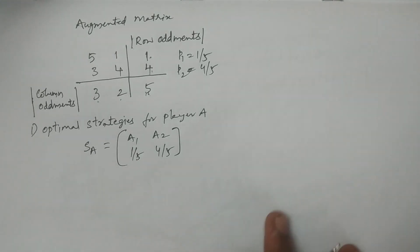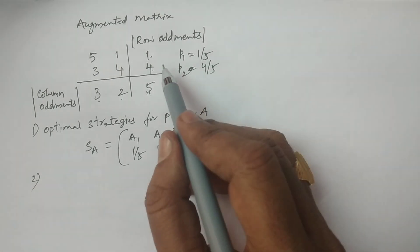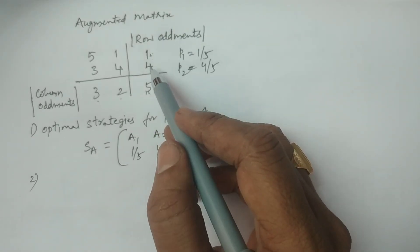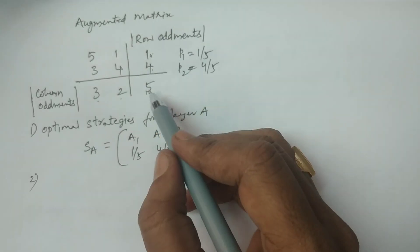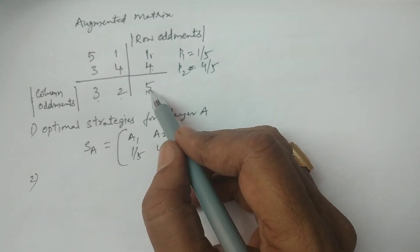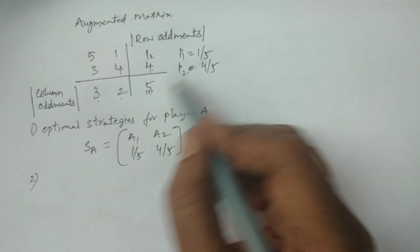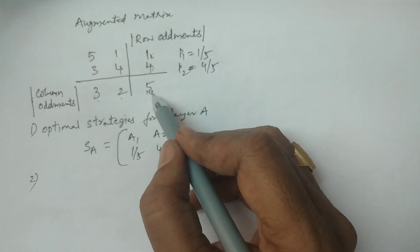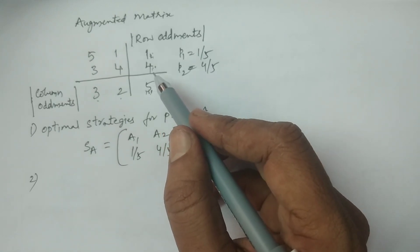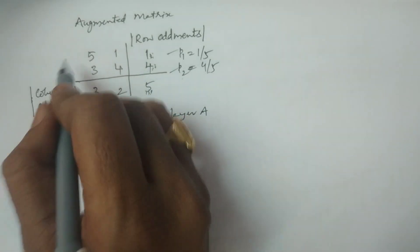The optimal strategy for Player A: SA = (a1, a2) with probabilities P1 = 1/5 and P2 = 4/5. The magnitude of the row oddments as fractions of the total: 1 out of 5 probability is 1/5, and 4 out of 5 probability is 4/5. That is P1 and P2 corresponding to strategies A1 and A2.